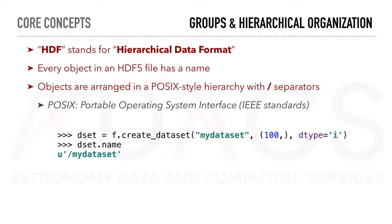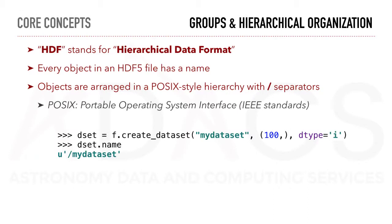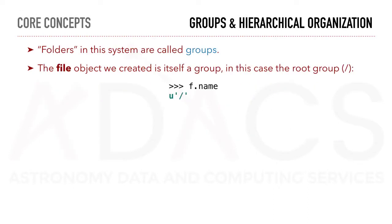HDF5 organizes resources in a tree-like structure where each node of the tree is separated by a slash and where each object has a name. This follows the style of folders on an operating system. Folders in the system are called groups. The file object we created is itself a group, in this case the root group, or slash.